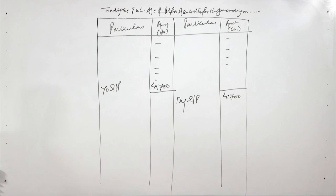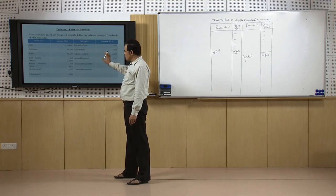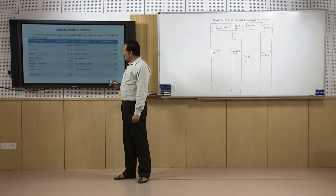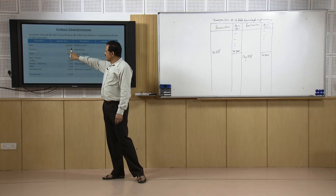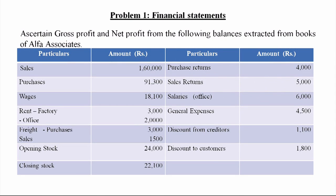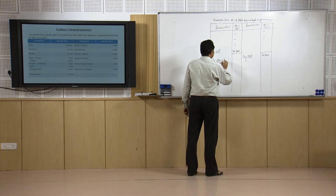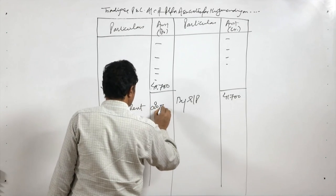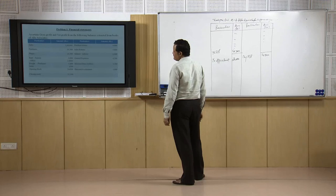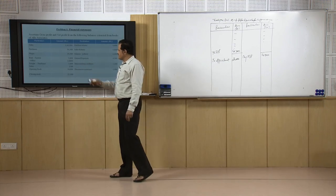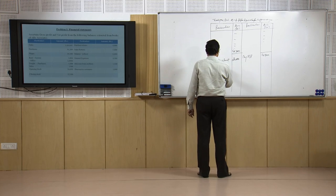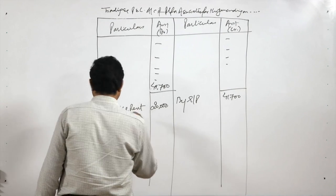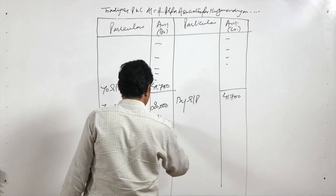This is the first income in the profit and loss account. We now consider other items not yet covered. Sales, purchases, wages, and factory rent have already been taken. We have not taken office rent — so the first head of indirect expense is office rent: 20,000 rupees. Then we take freight on sales, which is an indirect expense: 1,500 rupees.